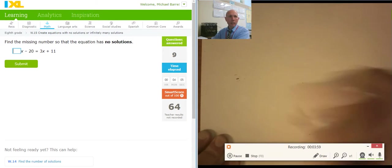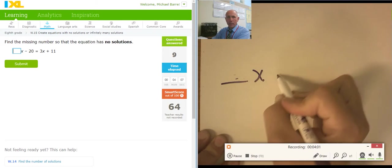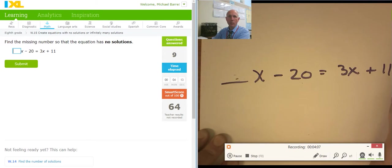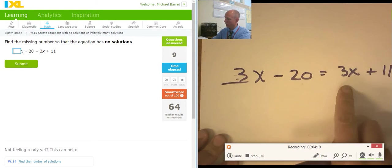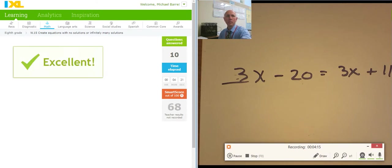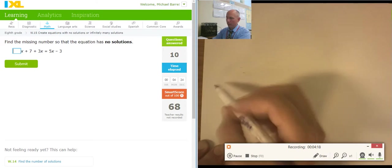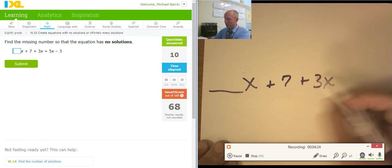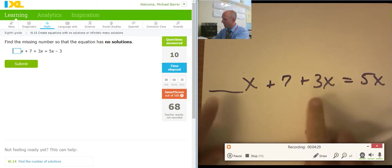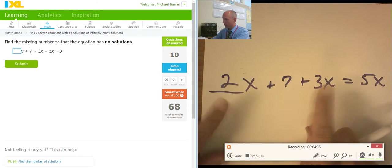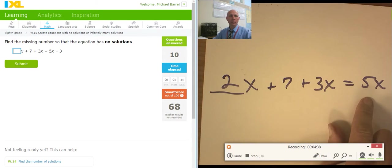Wonderful. Blank x minus 20 equals 3x plus 11. I want no solution. So I need a 3x here. 3x cancels with 3x. Those guys don't cancel, which means it's no solution. Blank x plus 7 plus 3x. 2x equals 5x equals 5x minus 3. Okay. So these x's have to add up to a 5. So if this is right, 2x plus 3x is 5x. 5x cancels with 5x. So it's going to be a 2x.